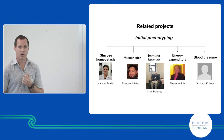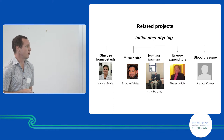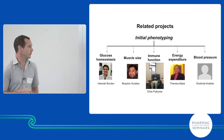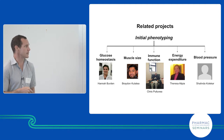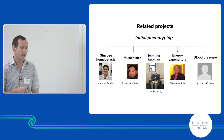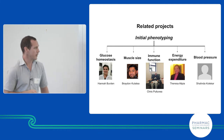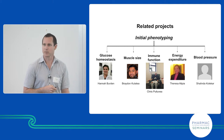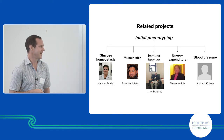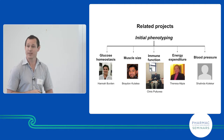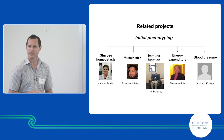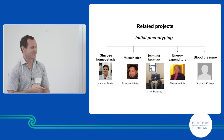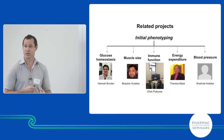Hannah has been responsible for the initial phenotyping and is also interested in glucose homeostasis — blood glucose regulation. Braden has been working with my lab for quite a number of years on initial phenotyping and muscle size. Chris is working on immune function — you can see him with all the infusions hooked up; he's also been one of our participants. Theresa is going to work on the energy expenditure side, and Shalinda is working on blood pressure, as some variants were found that associate with blood pressure.